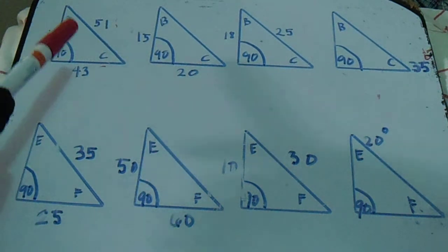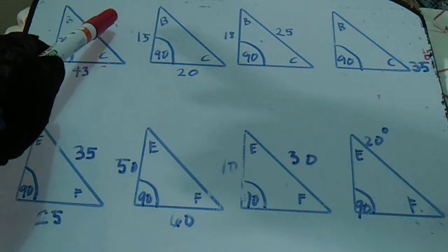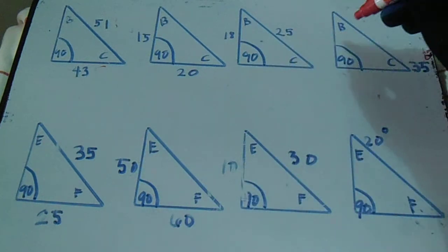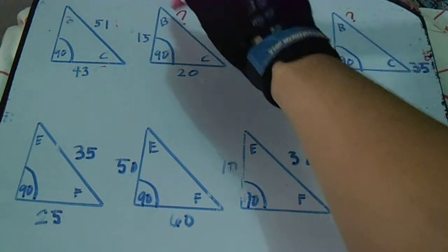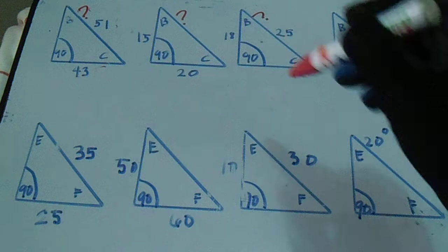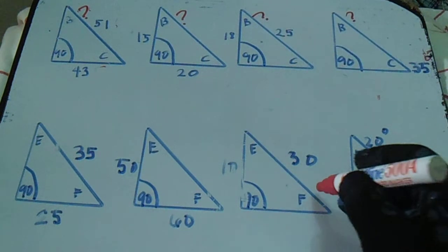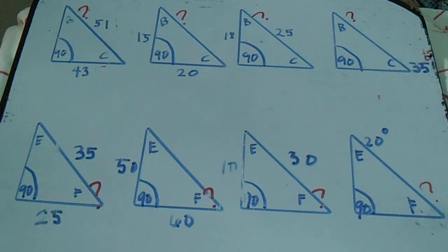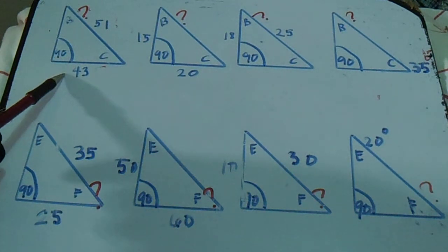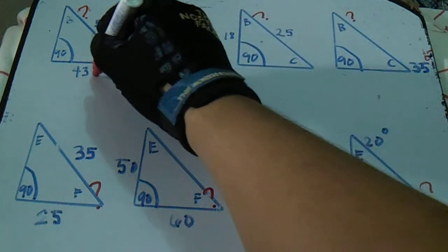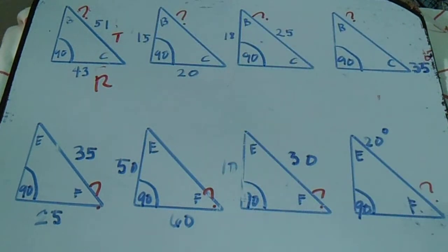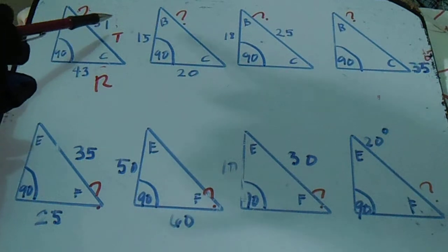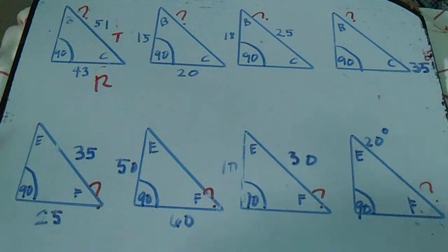This is our set, this is our run, and this is our travel. Our question mark — letter B — is from the top, and letter F is our question mark from the bottom. Our given is run and travel: 43 for the run and 51 for the travel.